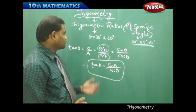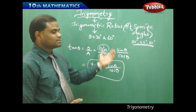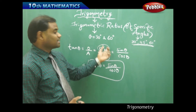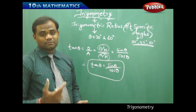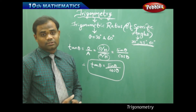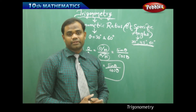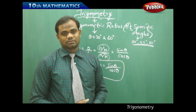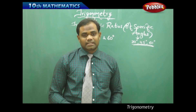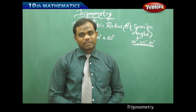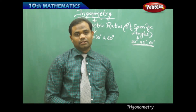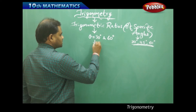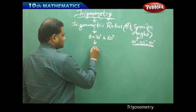Let's find sine 30, cos 30, sine 60, and cos 60, which will give us all the remaining trigonometric ratios. To derive the values for 60° and 30°, we consider an equilateral triangle.